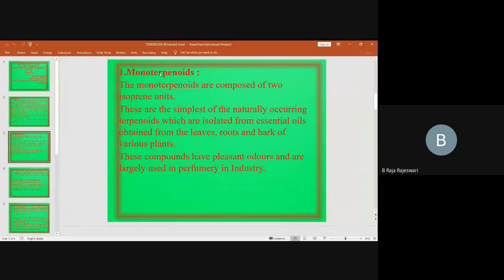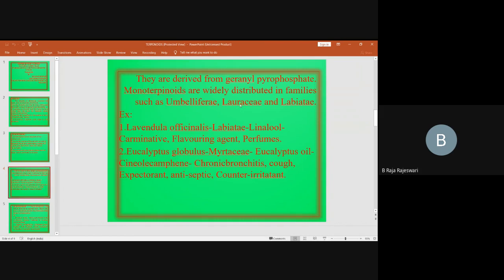First, monoterpenoids. The monoterpenoids are compounds of two isoprene units. These are the simplest of the naturally occurring terpenoids which are isolated from essential oils, obtained from the leaves, roots, and bark of various plants. These compounds have pleasant odors and are largely used in perfumery industry. They are derived from geranyl pyrophosphate. Monoterpenoids are widely distributed in families such as Umbelliferae, Laresii, and Labiasi.